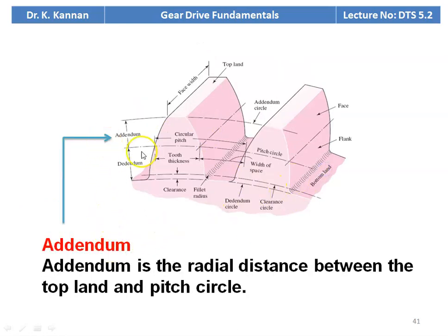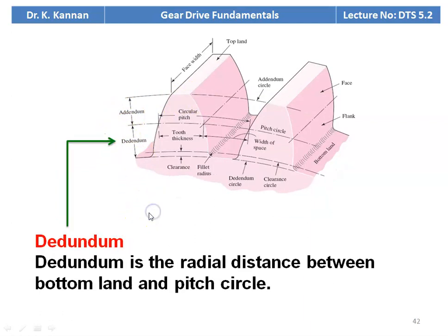Addendum: we have a pitch circle — PCD, pitch circle diameter — and the tip circle diameter. The addendum is the radial distance between the top land and the pitch circle. This surface at the top is called the top land, and its height is called addendum. Dedendum is the radial distance between the bottom land and the pitch circle. The root circle and the tip circle define these distances; the height between the pitch circle and the root circle is called dedendum.